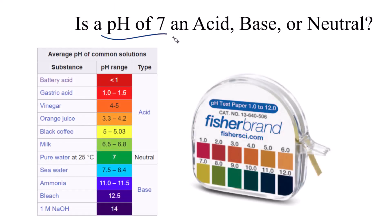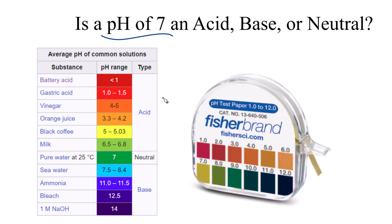So is a pH of 7 an acid, base, or neutral solution? How do we figure that out? Well, we have the pH scale. And when we look at this pH scale, right in the middle we have 7, which is neutral. So 7 is going to be a neutral solution.